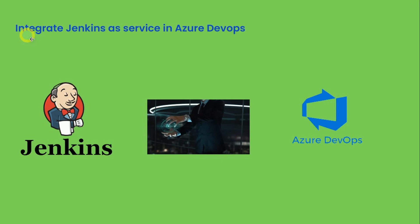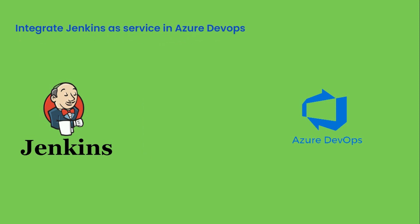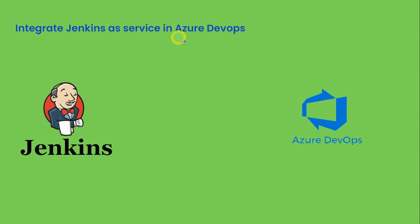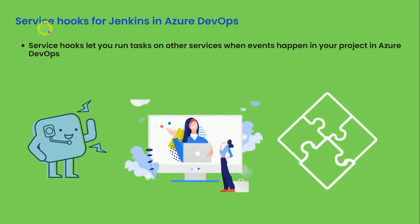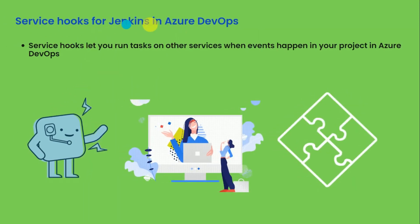Now let's integrate Jenkins as a service in Azure DevOps and see how we can do that. Once the integration is done and we have tested the connections, we want to create some service hooks for Jenkins in Azure DevOps.